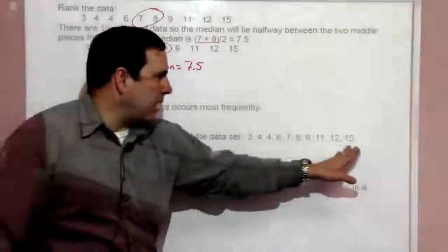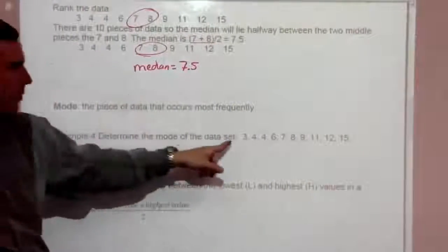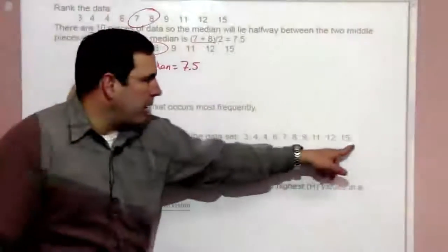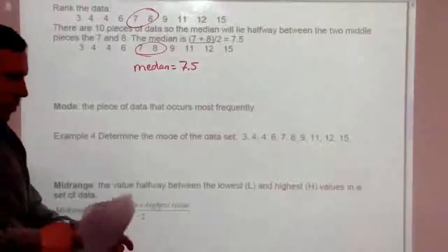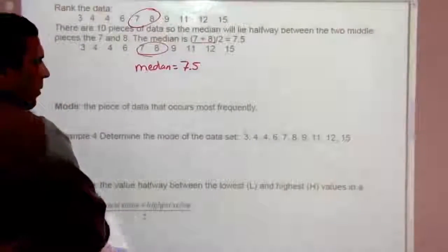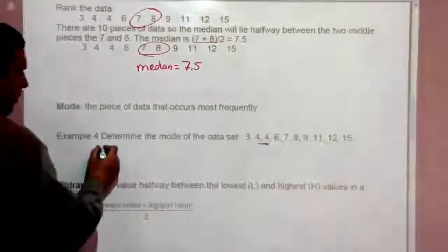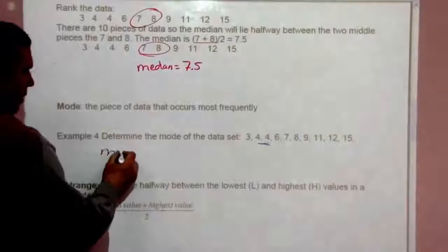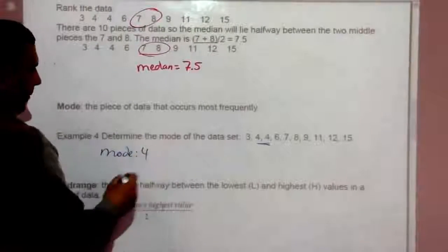In this same set of data from the previous example, which occurs most frequently? The only one that occurs twice is 4, so the mode is 4.